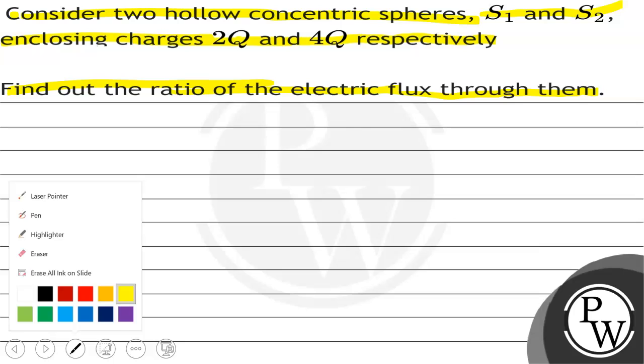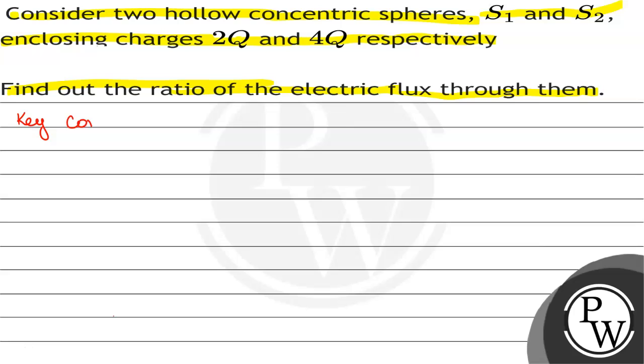First of all, we'll see what will be the key concept within the question. The key concept will be electric flux through a closed surface φ is equal to q enclosed divided by epsilon naught.